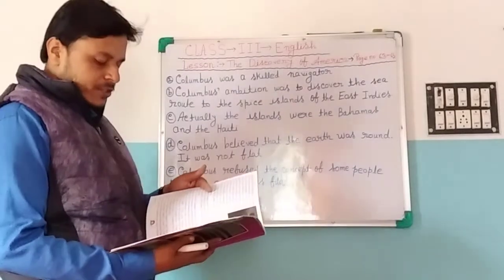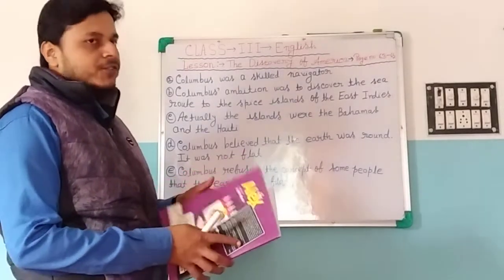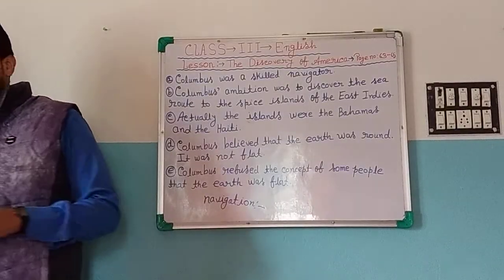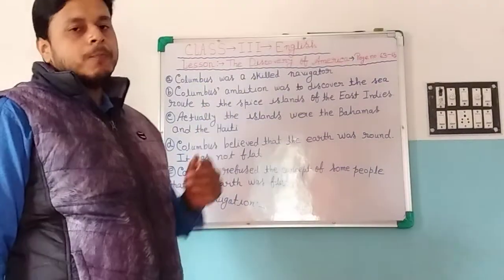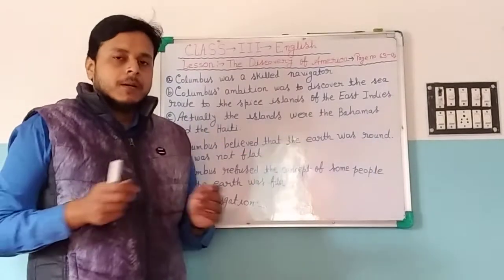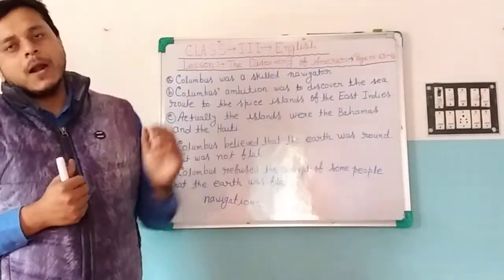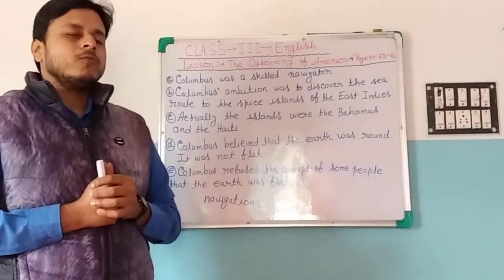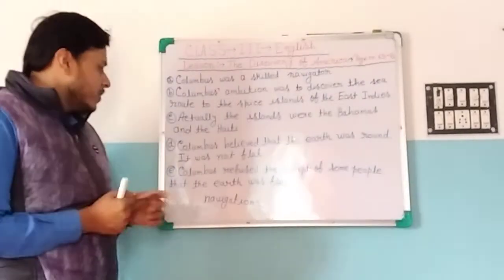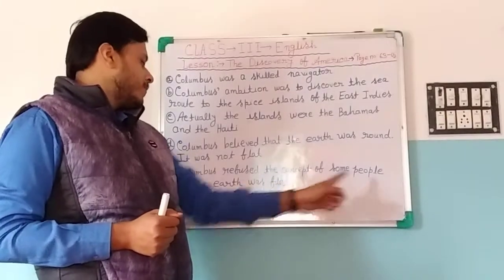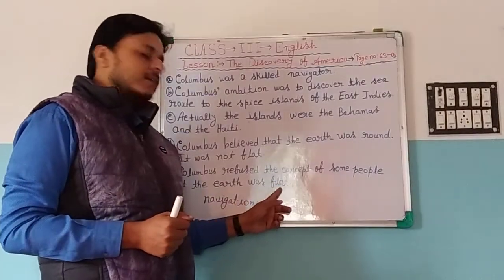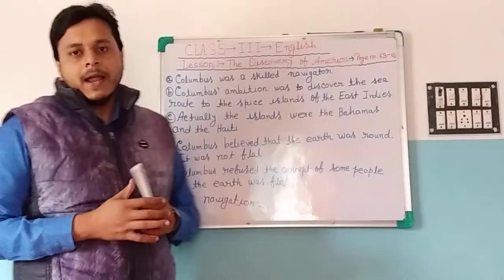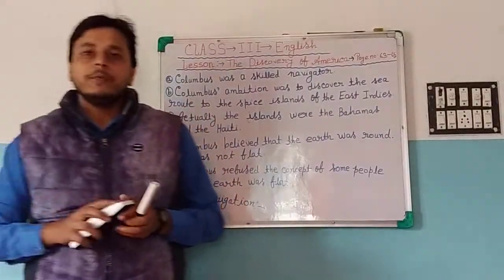Next question number four: What did he set out for his expedition? Do you know the term expedition? Expedition means a journey with a particular purpose to an unknown place, to explore a new place. Columbus refused the concept held by many people that the Earth was flat. It was also his ambition to prove that the Earth was round, and he set out on an expedition to prove his point.